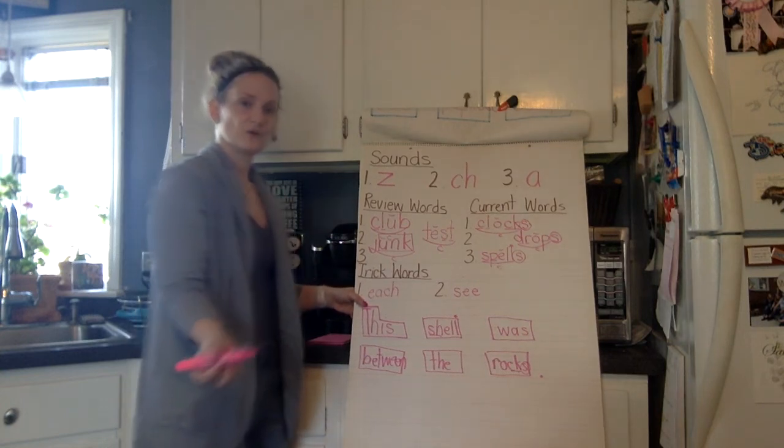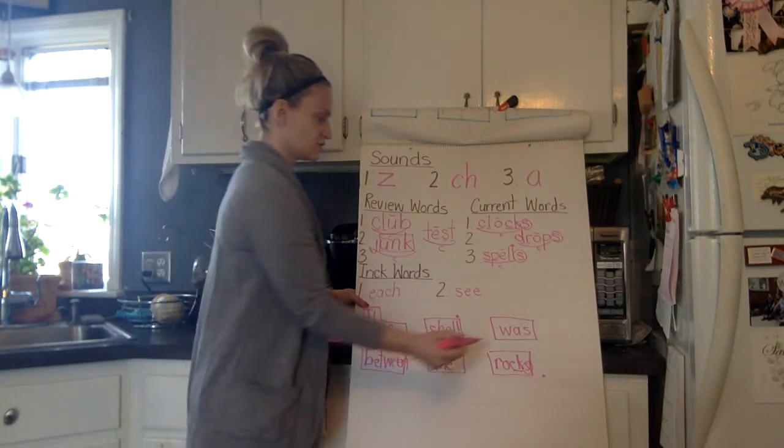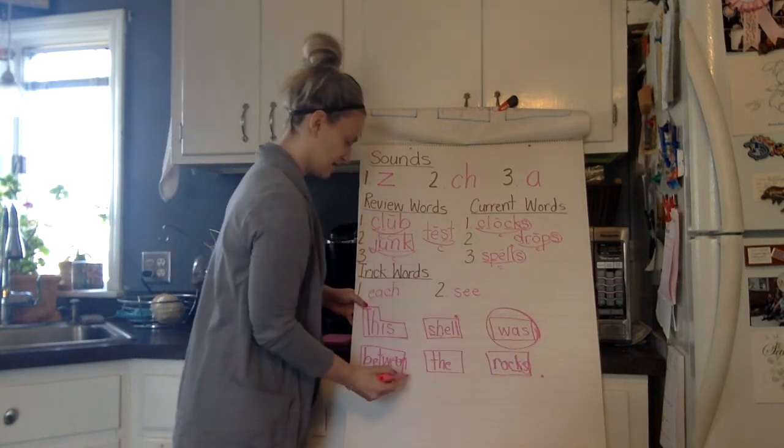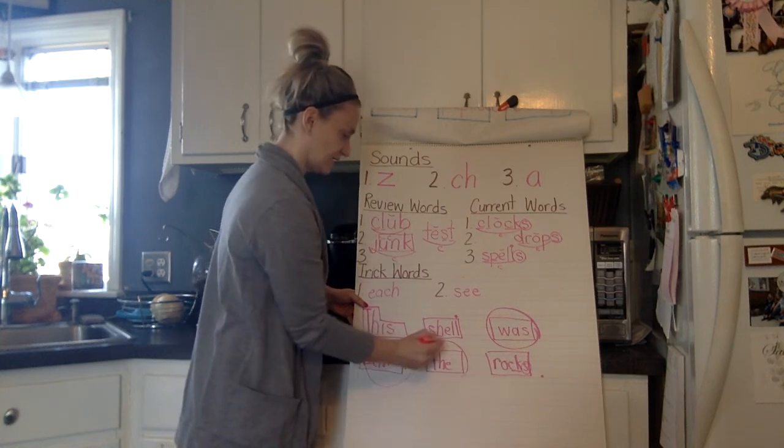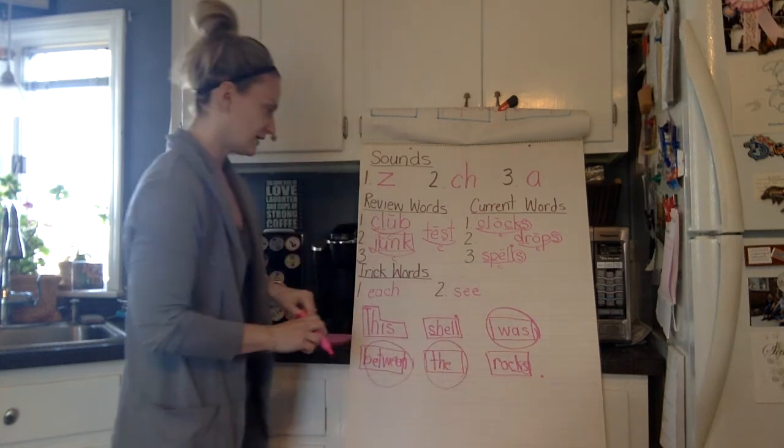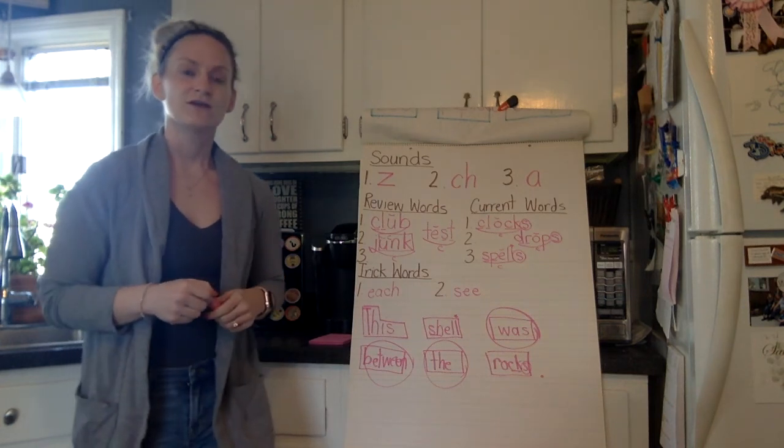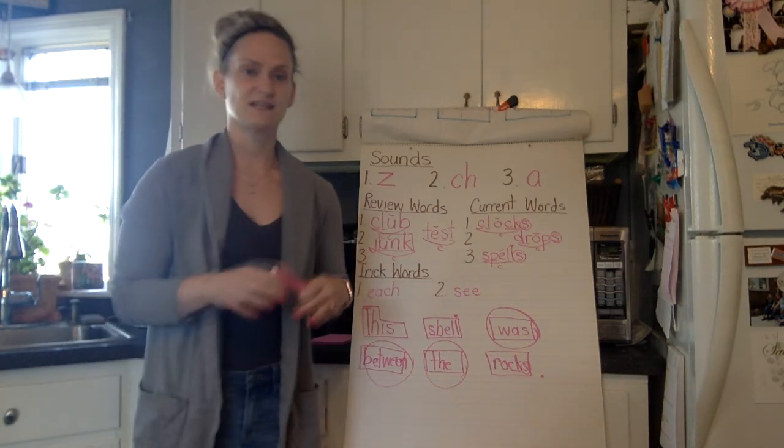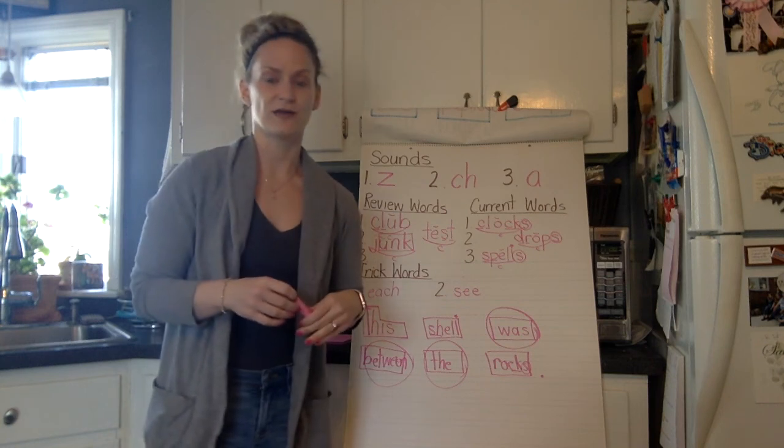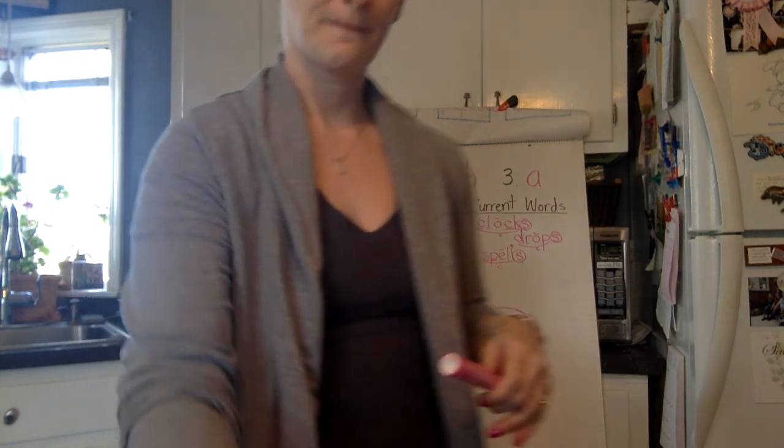And if you're in the habit of going back and circling our trick words, you could have circled was, between, and the. And that is our unit nine dictation. If you have any questions, have mom or dad send an email to your teacher, and we'll help you out along with that. Okay? See you later.